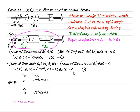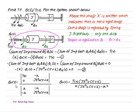Arranging equations 1 and 2 in matrix form and applying Cramer's rule, we get θ₁(s) = T(s)·(Js² + Cs + K) divided by the determinant K·(Js² + Cs + K) − K². Simplifying, the transfer function θ₁(s)/T(s) = (Js² + Cs + K) divided by the determinant of the variable matrix, which is the required transfer function.